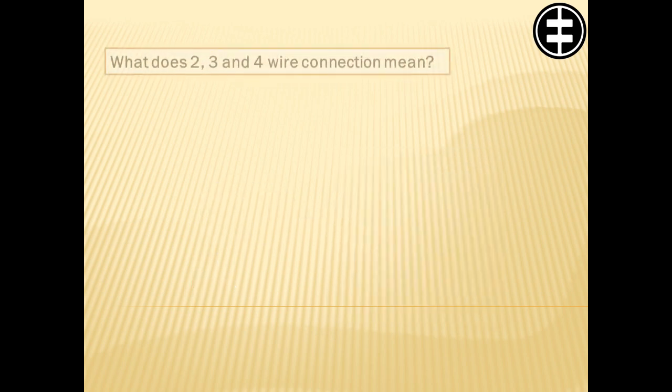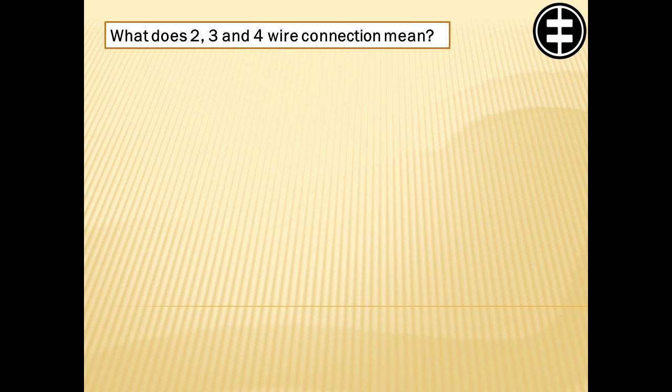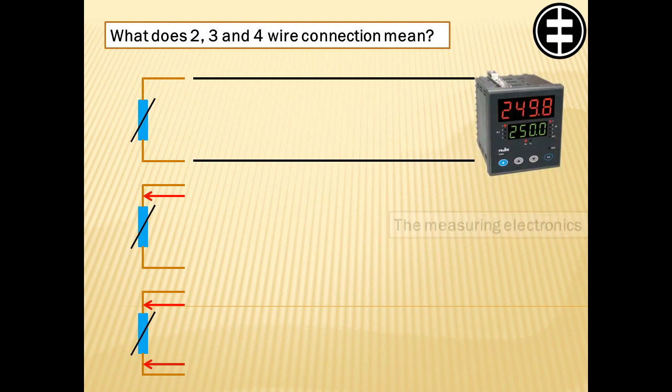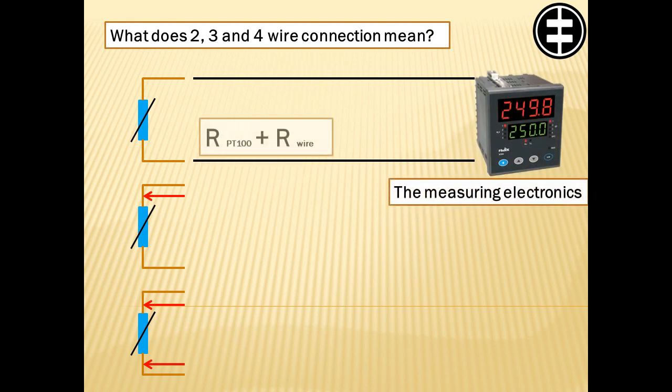What does 2, 3 and 4 wire connection mean? A resistance temperature detector, RTD, can be connected with 2, 3 or 4 wires. The 2 wire connection needs only 2 wires, but then the measuring electronics is measuring also wire resistance, which is not desirable.